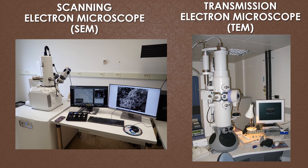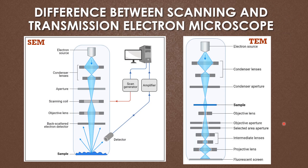Regarding the working principle, a majority of the parts are similar in both SEM and TEM, but the TEM contains some extra parts like selected area aperture, intermediate lenses, projective lenses, and fluorescent screen. Regarding the sample location, the sample is present at the end in the SEM, but in the TEM the sample is present in the middle, and parts like the objective lens are present above the sample.